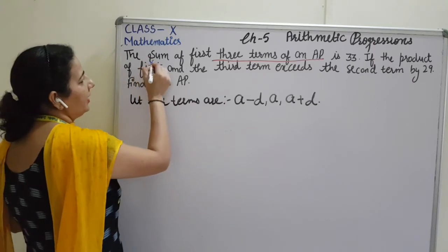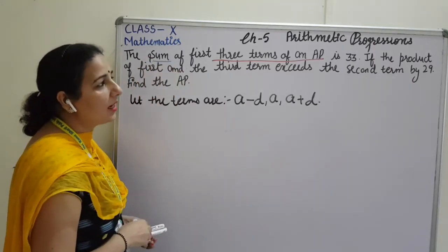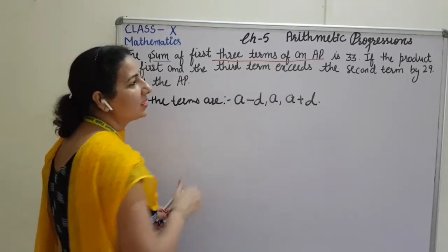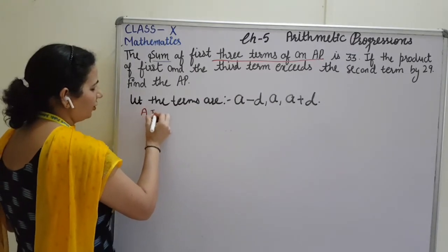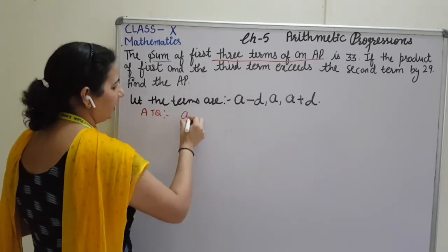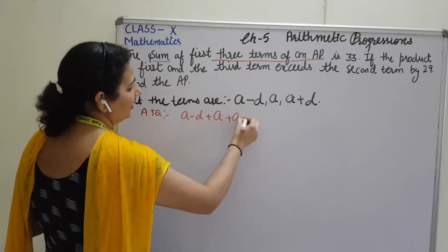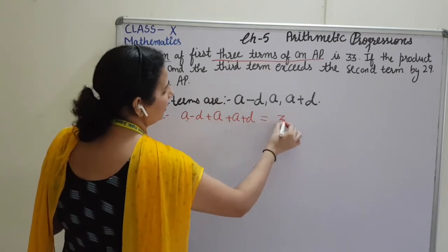Now, these terms are in AP and they have given sum of these 3 terms is 33. It means, when you will add these 3 terms, the sum will be 33. So, according to the question, sum of these 3 terms: A minus D, A and A plus D. When I will add these old terms, the answer is 33.